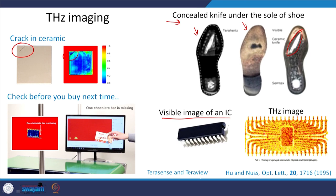Here is another example: a chocolate box imaged with terahertz reveals that one of the chocolate bars is missing. If you have a terahertz scanner in a supermarket, you can immediately know whether the packaged food or item has the same quantity or quality as expected. These are some of the uses where we can apply terahertz spectroscopy.